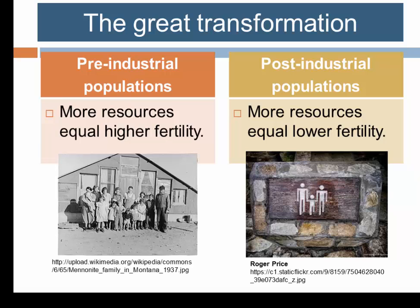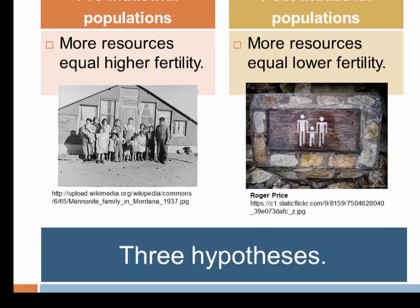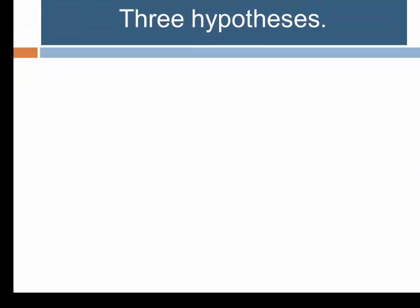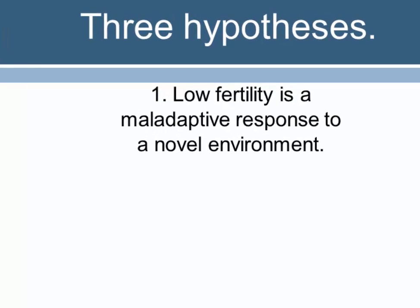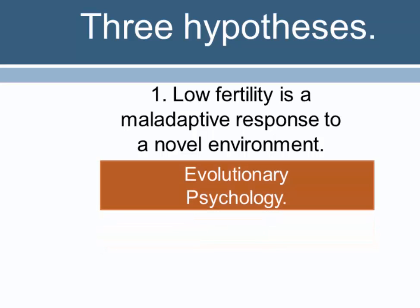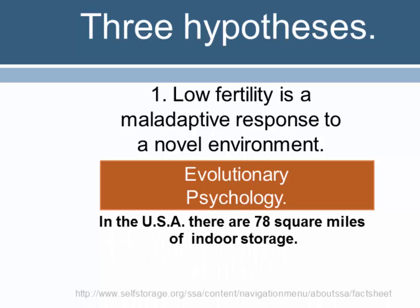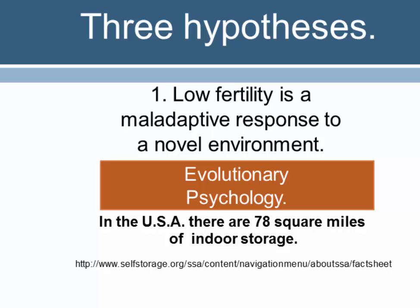Three hypotheses have been offered to explain why people aren't investing their resources to increase fertility. The first comes from evolutionary psychology, which argues that the decrease in fertility in a context of greater resources represents a maladaptive response to a novel environment. This is a standard argument in evolutionary psychology — that the industrial environment is so novel we shouldn't be surprised to observe maladaptive behaviors.